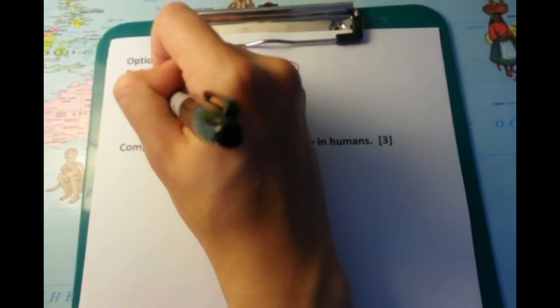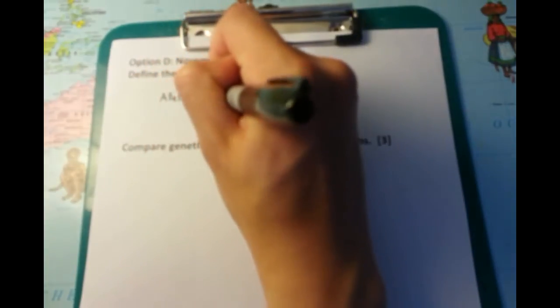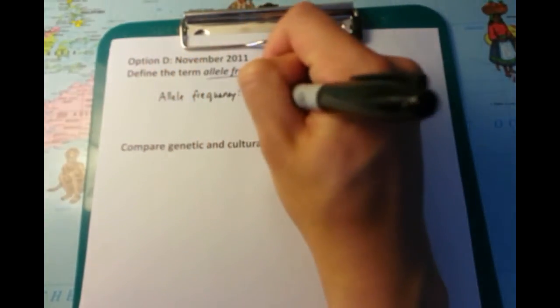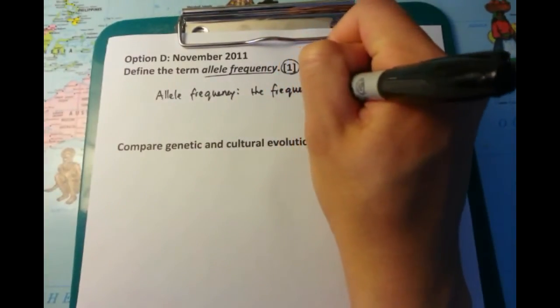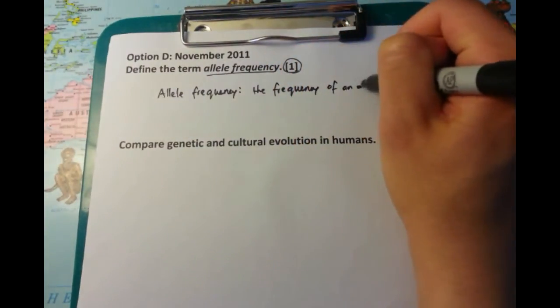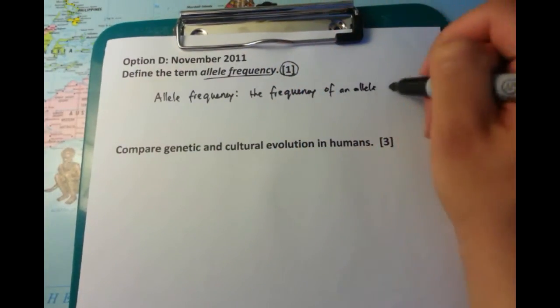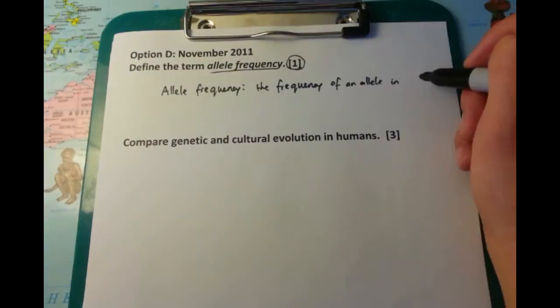This particular question is one of the definitions you need to know, and surprisingly enough it's pretty much what it sounds like. It's the frequency of a particular allele in proportion to all copies of that particular allele.